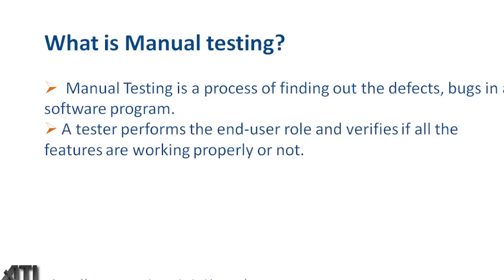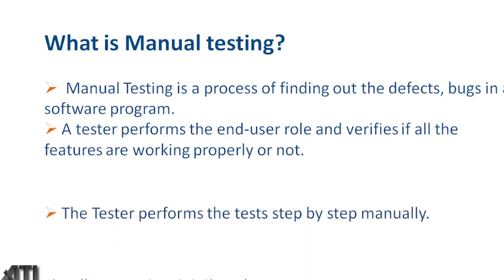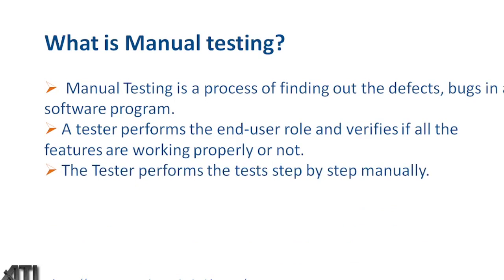A tester performs the end-user role and verifies if all the features are working properly or not — this is called manual testing. We need to act as the end user, because we are delivering the application to the customer. We need to act as a customer to verify the application whether it is working as per their needs. The tester performs the test steps step by step manually.